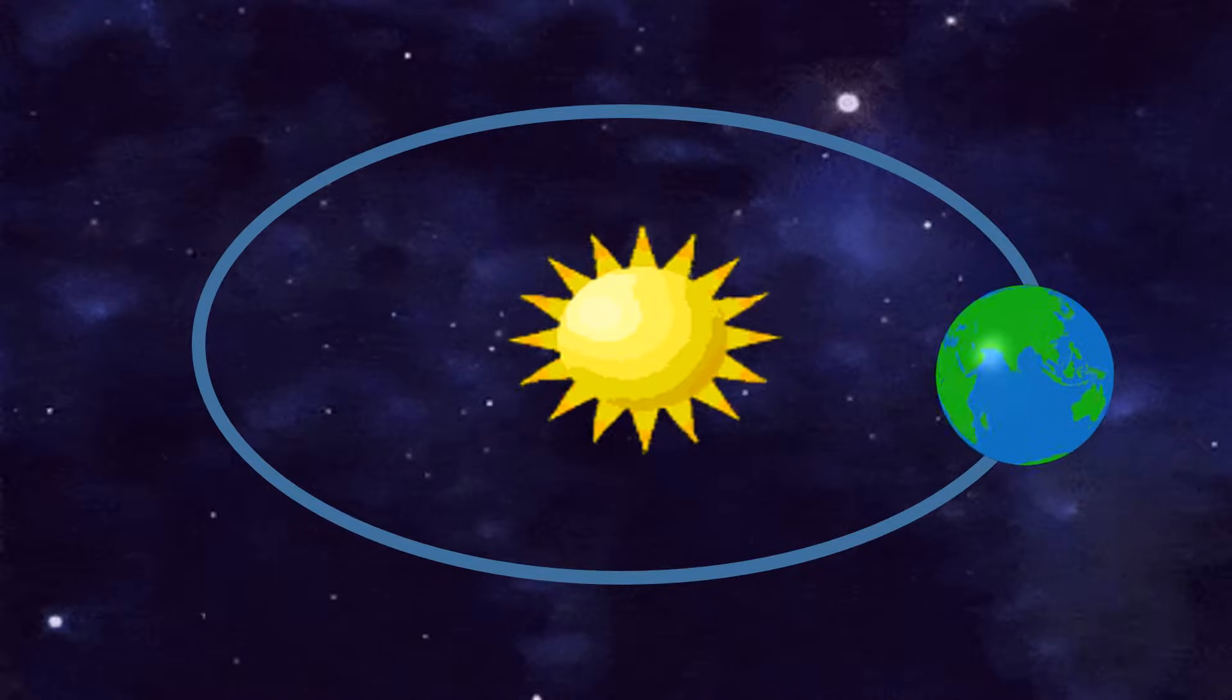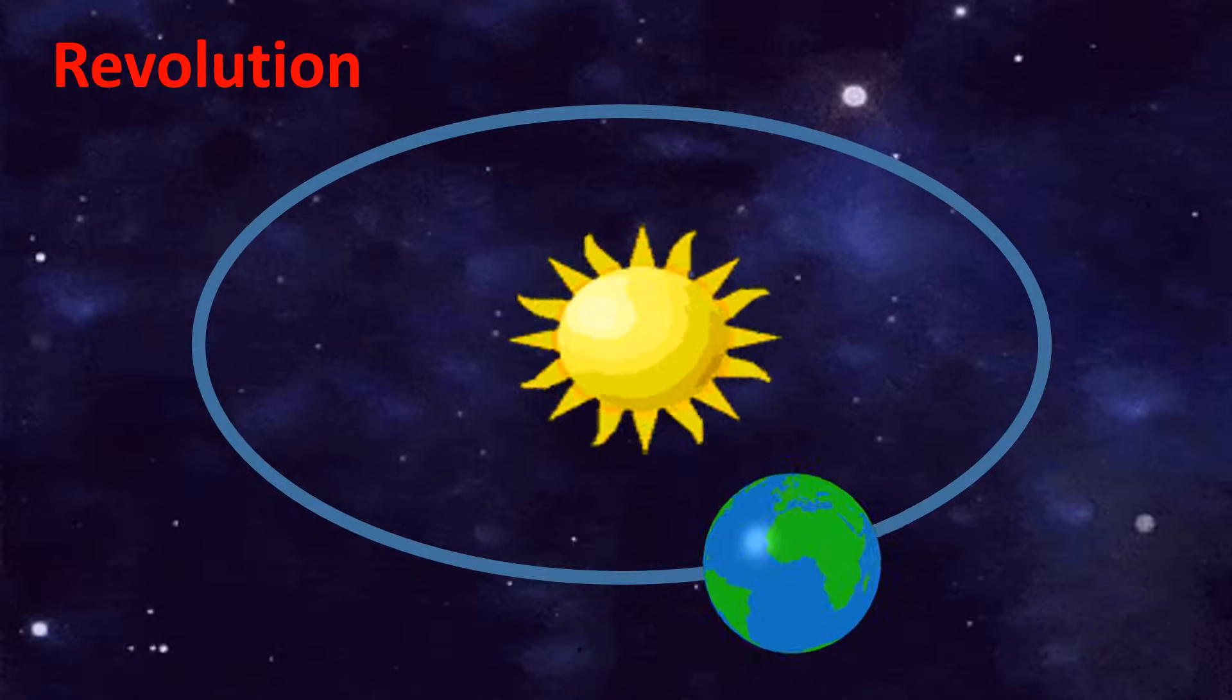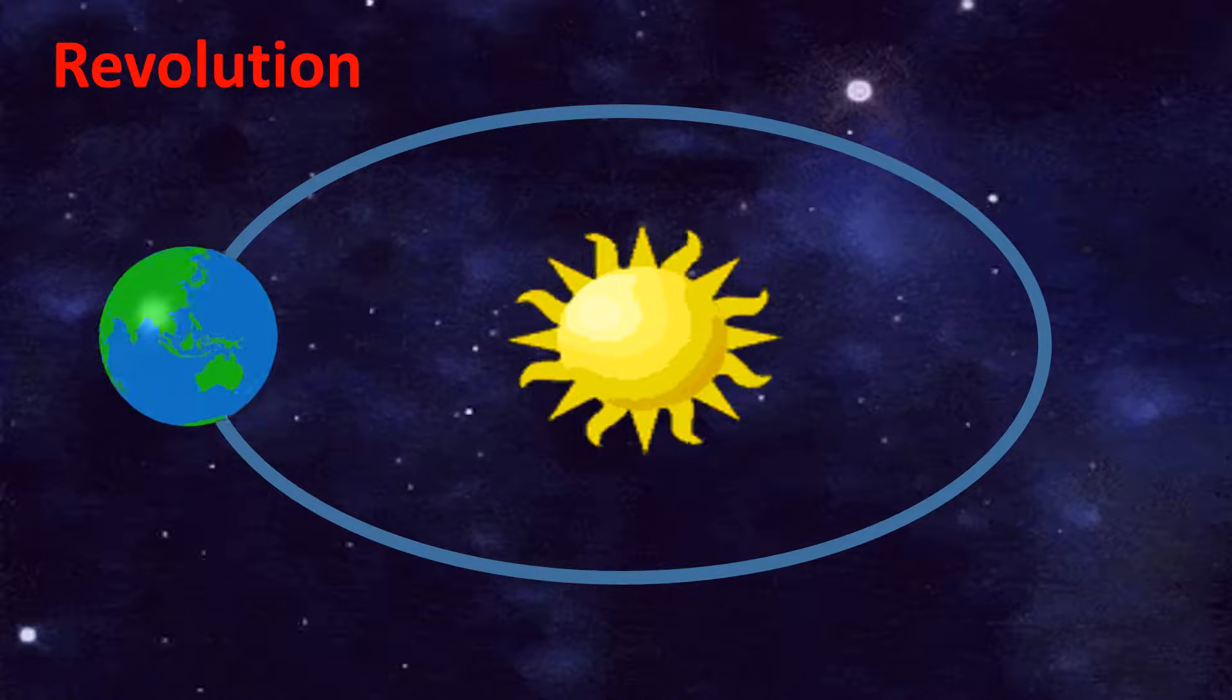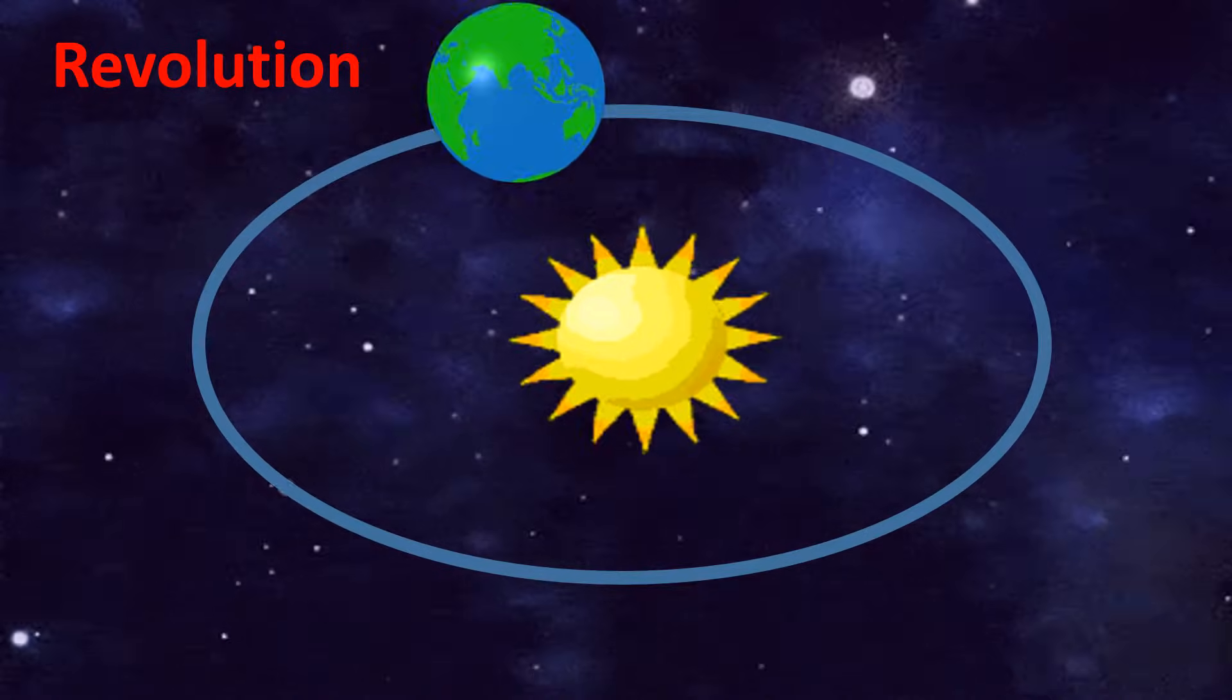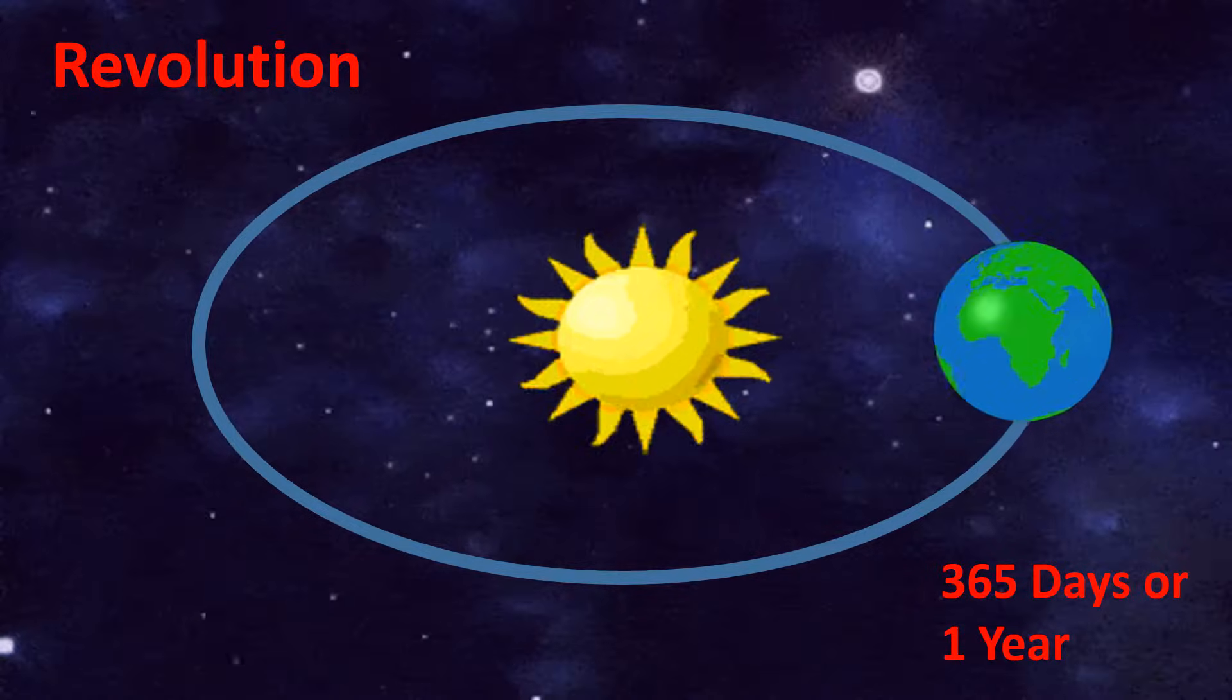Second one is revolution. The movement of the Earth around the sun is called a revolution. It takes 365 days, or one year, for the Earth to make one full revolution around the sun.